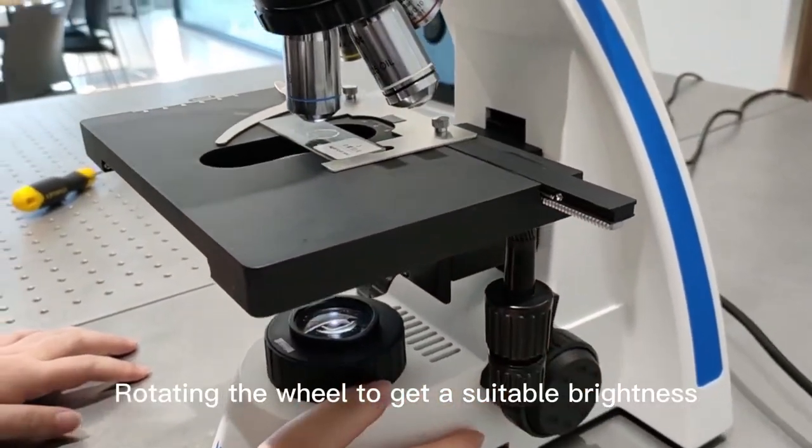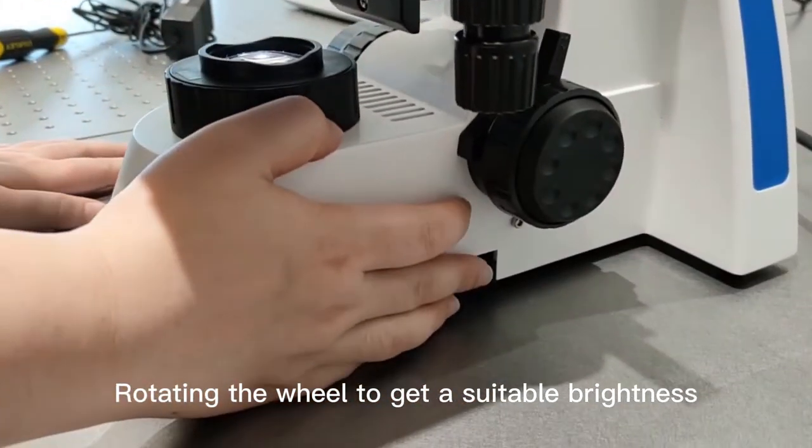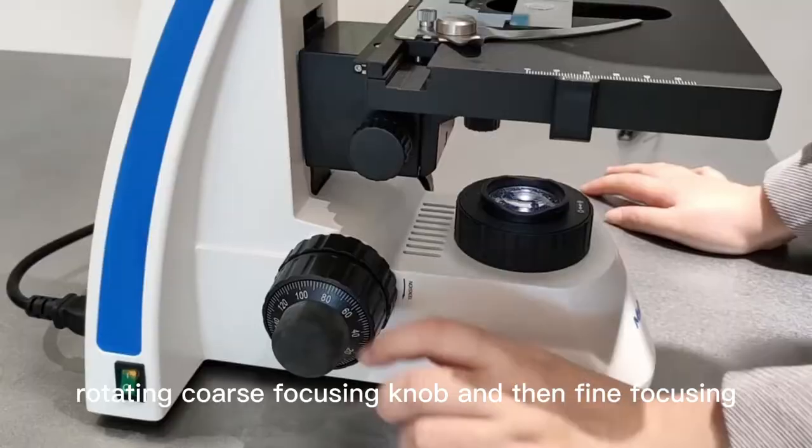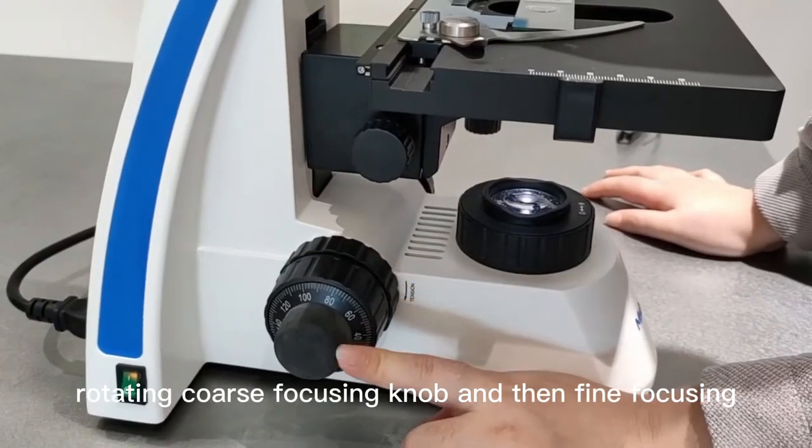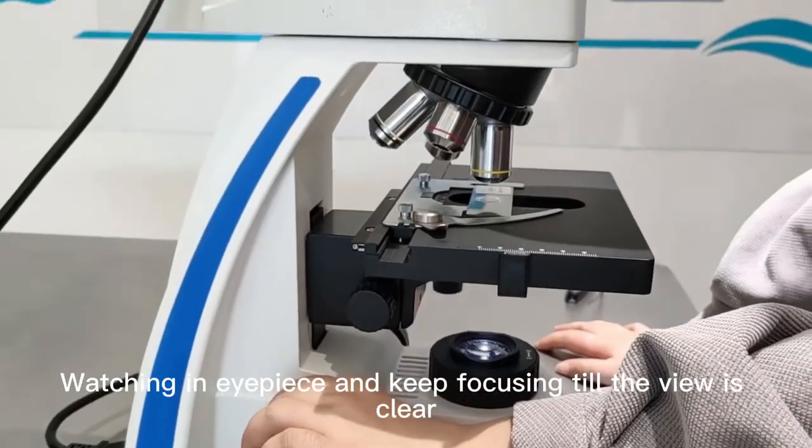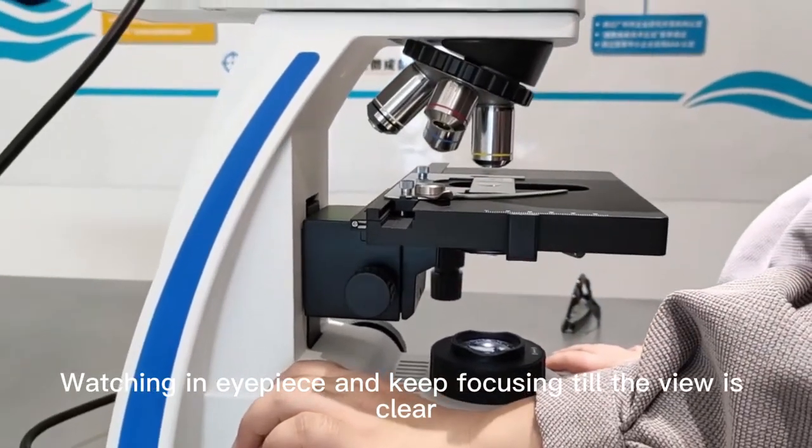Rotate the wheel to get suitable brightness. Lift the condenser to the top. Rotate the coarse focusing knob and then fine focus. Watch in the eyepiece and keep focusing till the view is clear.